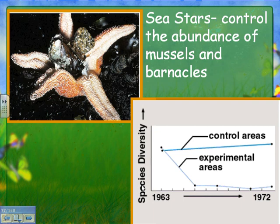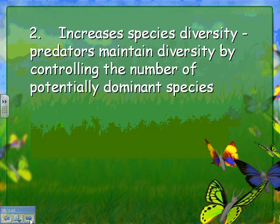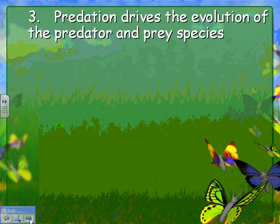Here we see species diversity — the number of different types of shellfish living in an intertidal zone. With lots of sea stars eating mussels, many other types of shellfish can also live there, showing high species diversity. In an experiment, scientists removed the sea stars, and the mussels thrived since nothing was eating them, but almost all the other organisms died. This shows that predators maintain diversity by controlling the number of potentially dominant species.